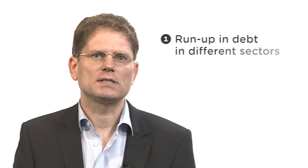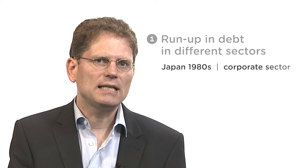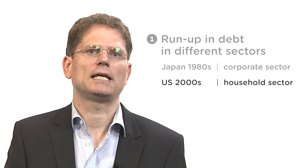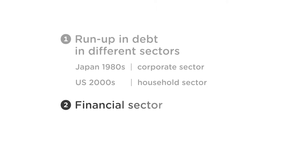First, the run-up in debt can occur in different sectors from crisis to crisis. For example, in Japan in the 1980s, the debt level increased significantly in the corporate sector. In contrast, in the United States in the 2000s, a run-up of debt occurred in the household sector, while the corporate sector's debt increased only marginally.